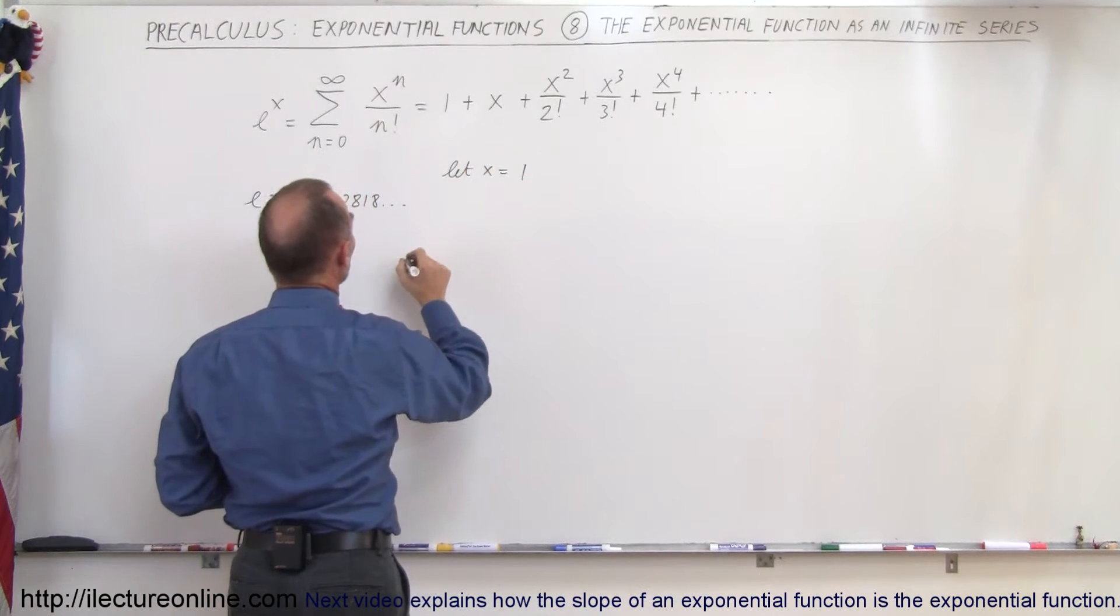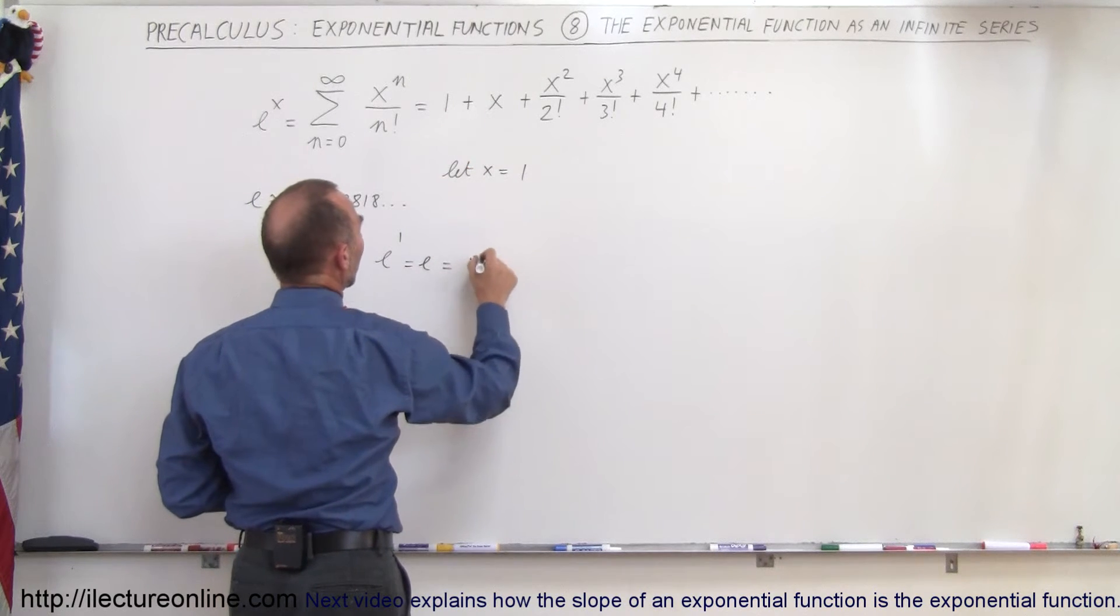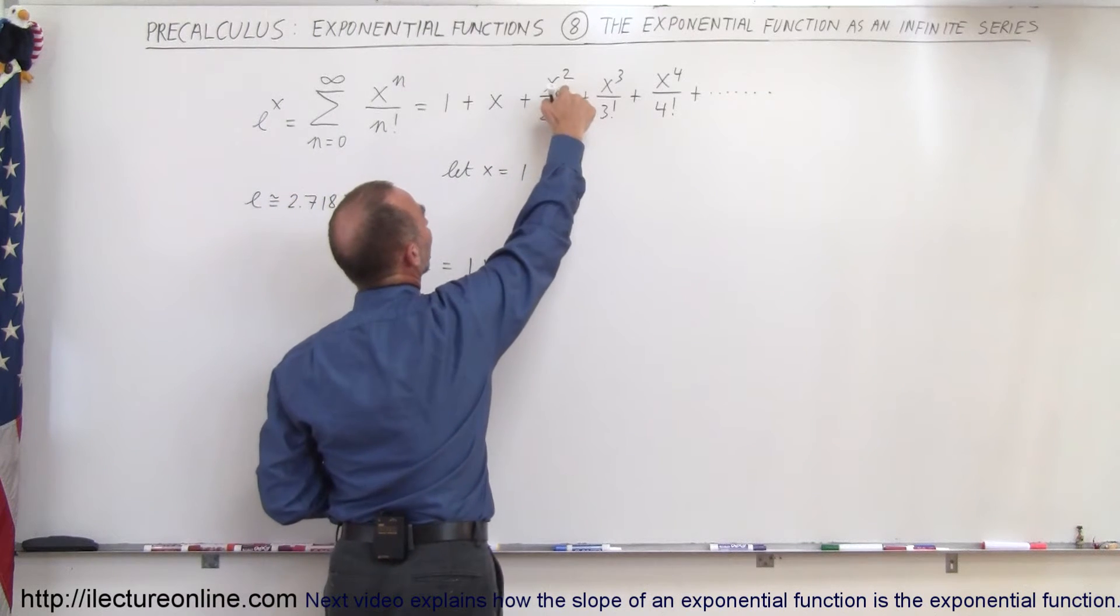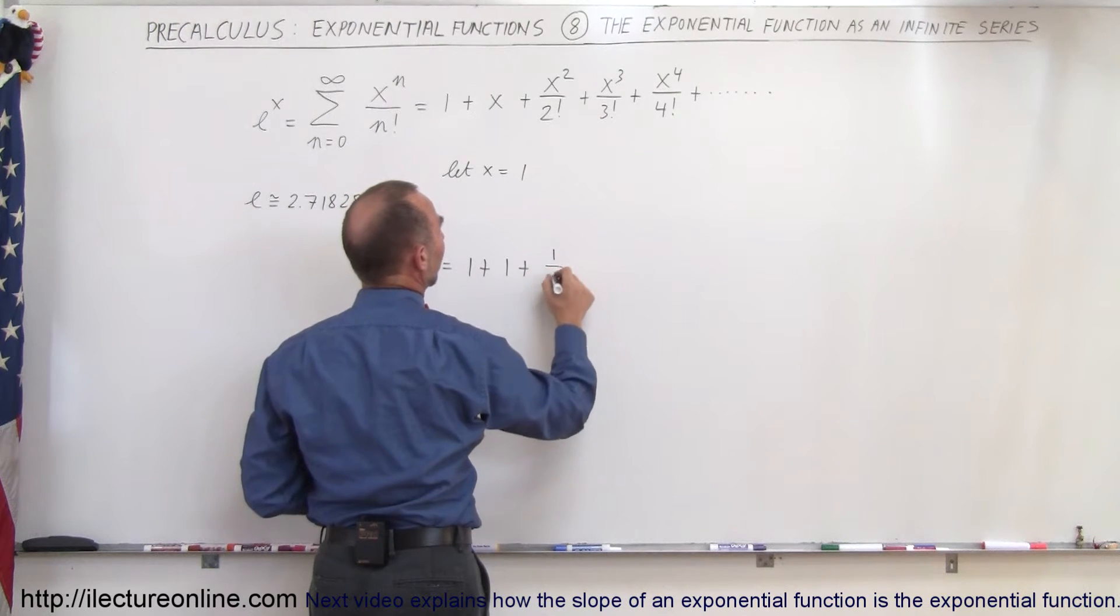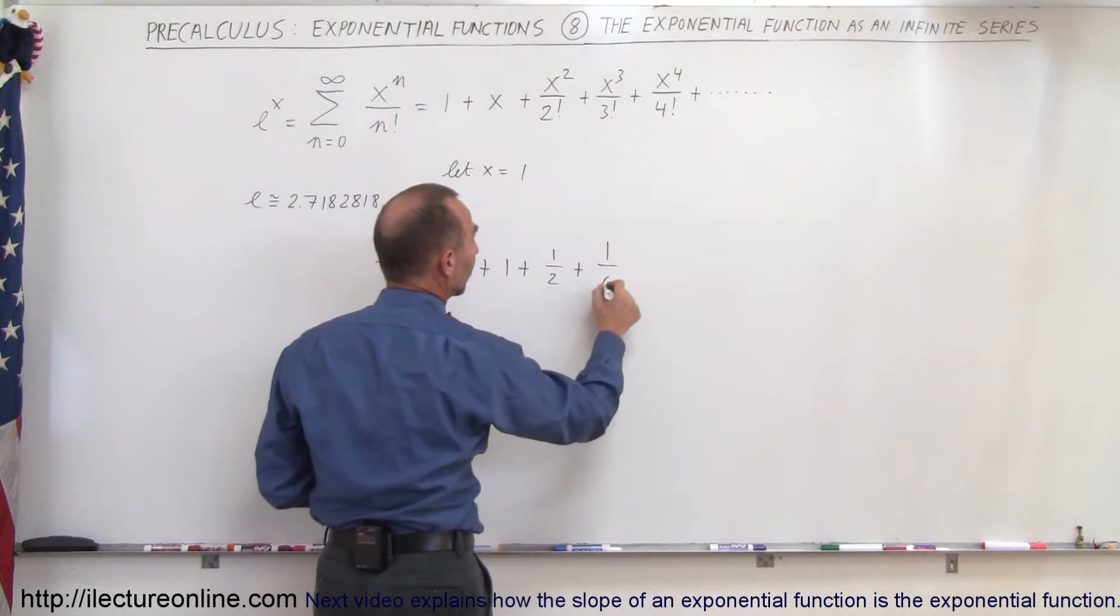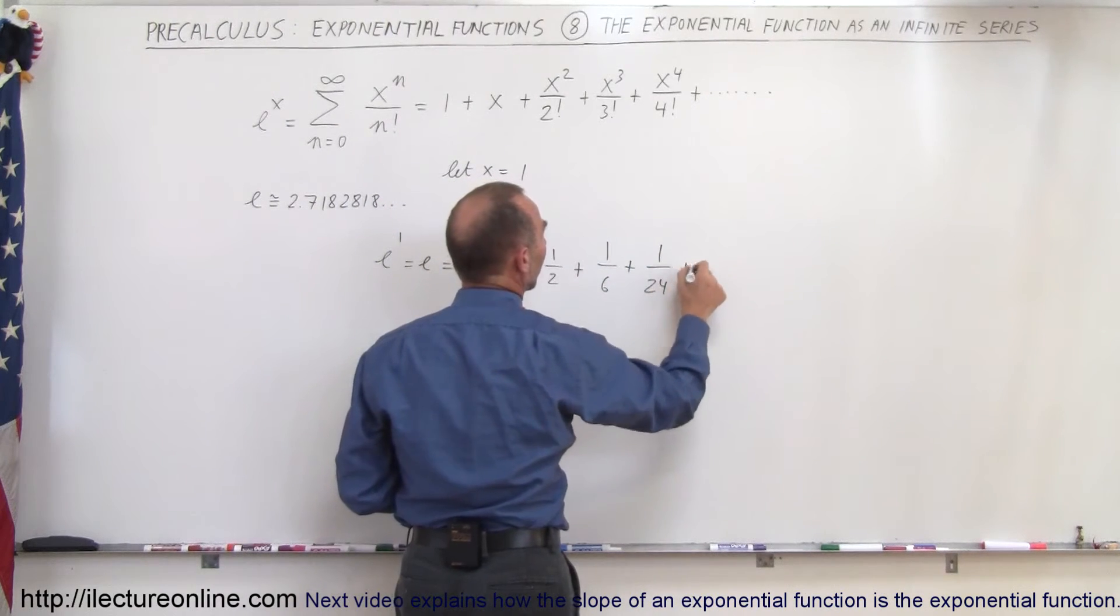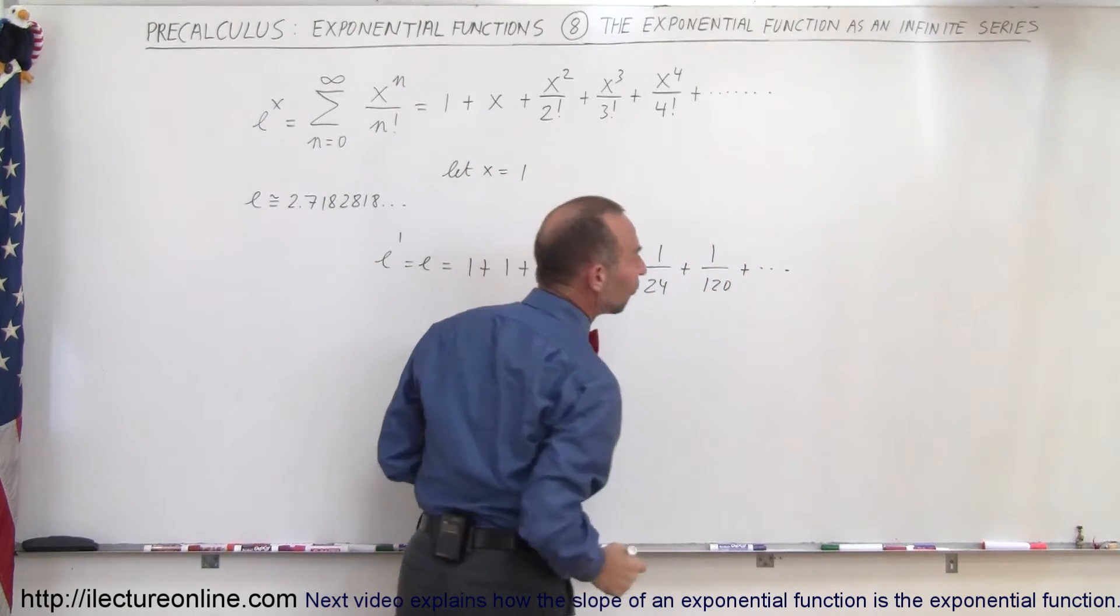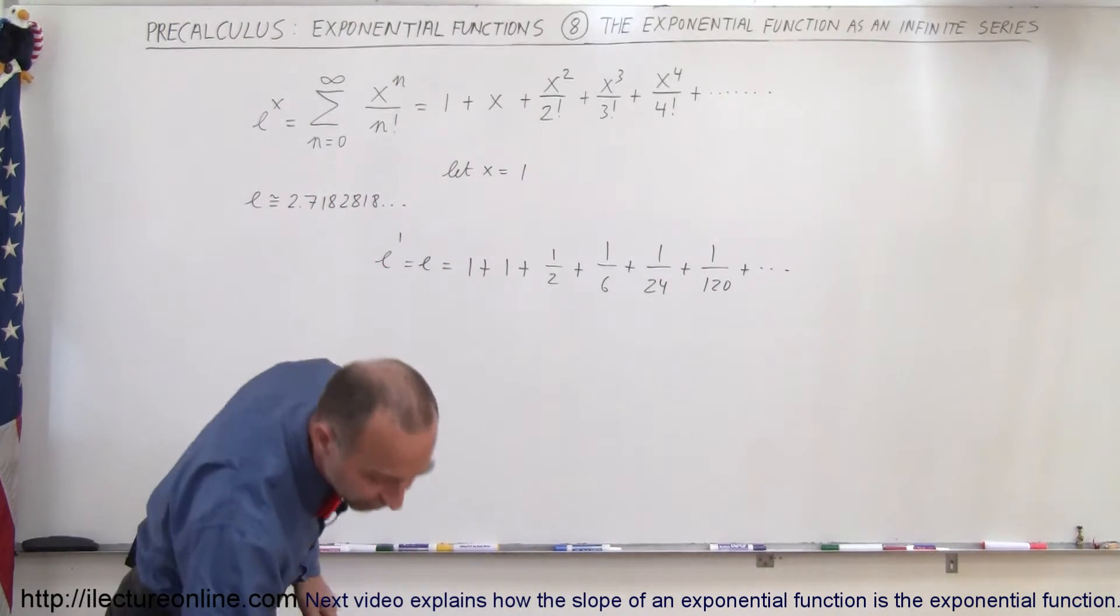We can say that e to the first power, which is equal to e, is equal to 1, plus since x is equal to 1, that would become 1, plus x squared, 1 squared is still 1 divided by 2 factorial, so it would be plus 1 divided by 2, plus 1 divided by 3 factorial, which is 6, plus 1 divided by 4 factorial, which is 24, plus 1 divided by 5 factorial, which is equal to 120, and so forth. Let's see what we get for the value for e when we go out to that infinite series.